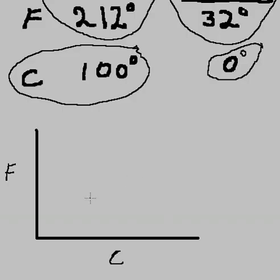Well, let's graph them and see what we can learn. Here's Celsius, here's Fahrenheit. I'll put 0 here and 100 degrees here for Celsius, and here's 0 degrees Celsius, here's the boiling point, and here's the freezing point.